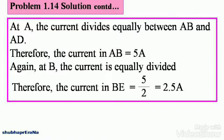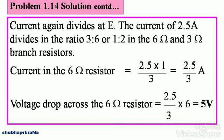The current divides equally between AB and AD, so the current in AB equals 5 amperes. Again at B, the current is equally divided, therefore the current in BE is equal to 5 divided by 2, which gives you 2.5 amperes.